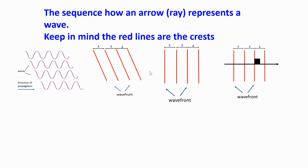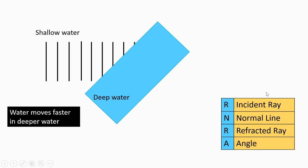Keep in mind the red lines are the crests of the wave. We start from a sequence of waves, draw the wavefront, shift the wavefront to a top-down view, and then draw an arrow perpendicular to the wavefront. Now we are ready to draw the diagram of water waves moving from shallow water to deep water. The deep water section is represented by the blue rectangle. We use the acronym RNRA to give us the sequence for drawing this diagram.